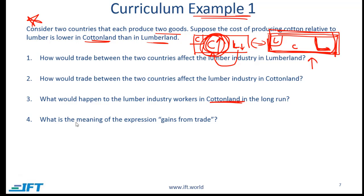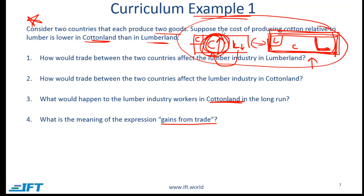What is the meaning of the expression 'gains from trade'? Gains from trade means that overall the two countries are better off. Consumers in both countries now get better cotton and better lumber. However, this does not mean that all stakeholders are better off — those in the lumber industry in cotton land are not better off, at least in the short run, and those who remain in the long run will have lower incomes. Gains from trade does not mean everyone gains; it means the countries gain on average.